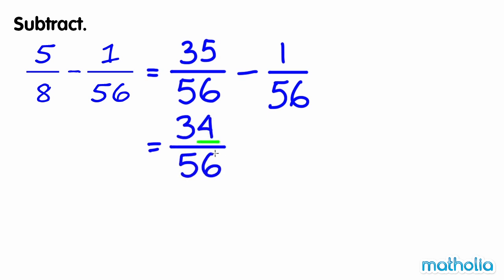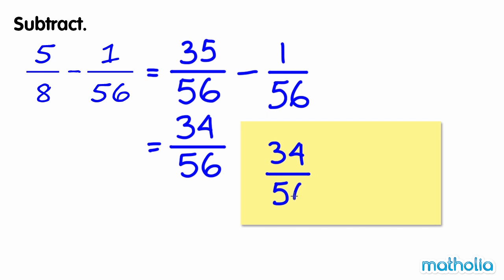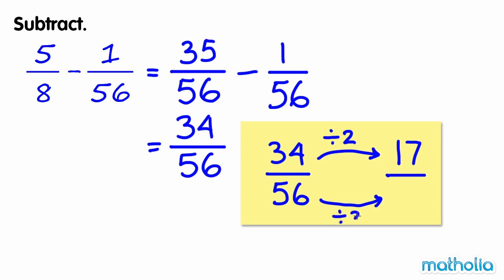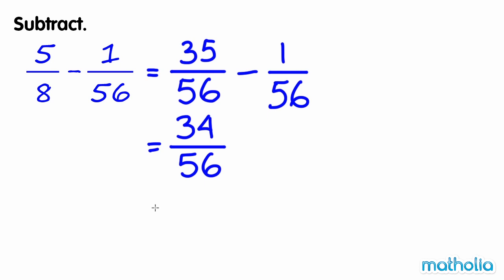Both the numerator and the denominator are even numbers, so we can simplify this fraction by dividing the numerator and the denominator by 2. 34 fifty-sixths equals 17 twenty-eighths. So 5 eighths minus 1 fifty-sixth equals 17 twenty-eighths.